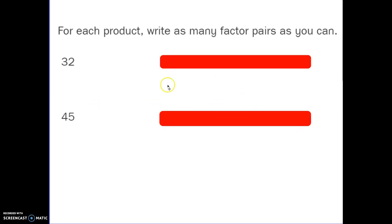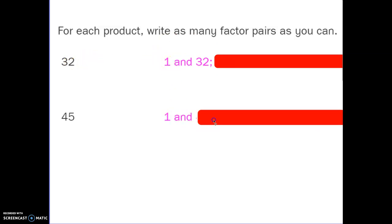Now the factor pairs for 32 and the factor pairs for 45. Pause the video while you write those down. What makes 32? Well, 1 and 32. The number 1 and the number itself will always be a factor pair. For 45, 1 and 45.